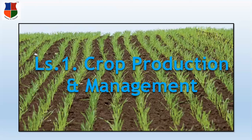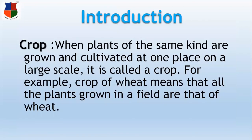Let's see what we mean by crop. When plants of the same kind are grown and cultivated at one place on a large field, it is called a crop. For example, a crop of wheat means that all the plants grown in a field are that of wheat. Similarly, a crop of rice means that all the plants grown in a field are that of rice.